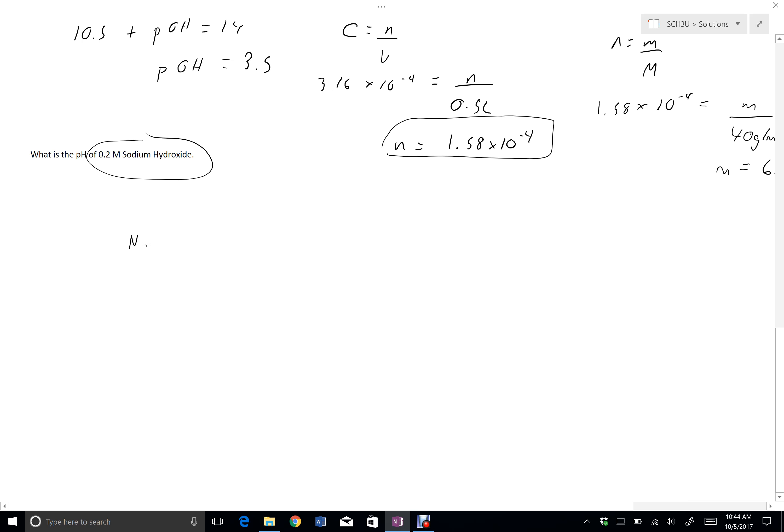Sodium hydroxide dissociates into sodium and hydroxide in a one-to-one relationship. So if my concentration of sodium hydroxide is 0.2 molar, then my concentration of hydroxide will also be 0.2 molar.